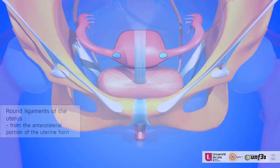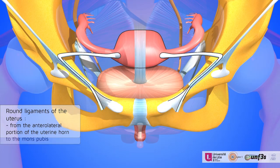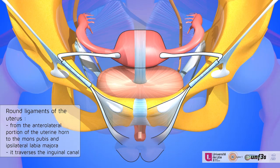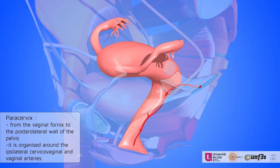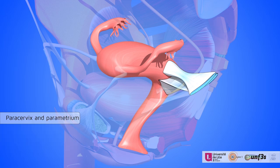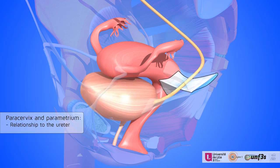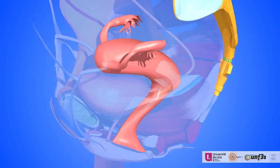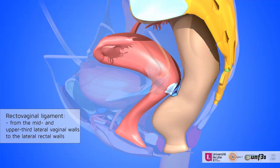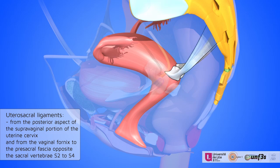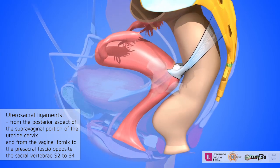The uterus is suspended by several pairs of ligaments: the round ligaments, the paracervix and parametrium with their link with the ureter and the uterine artery. Posteriorly, we find the rectovaginal ligaments and the utero-sacral ligaments, running from the vaginal fornix to the presacral fascia.